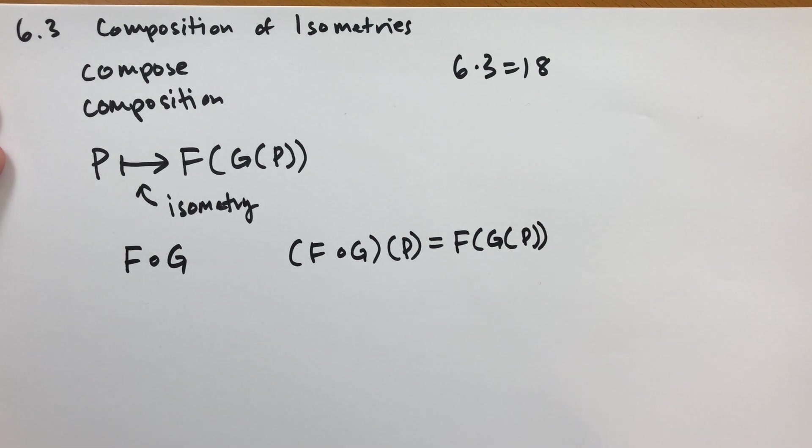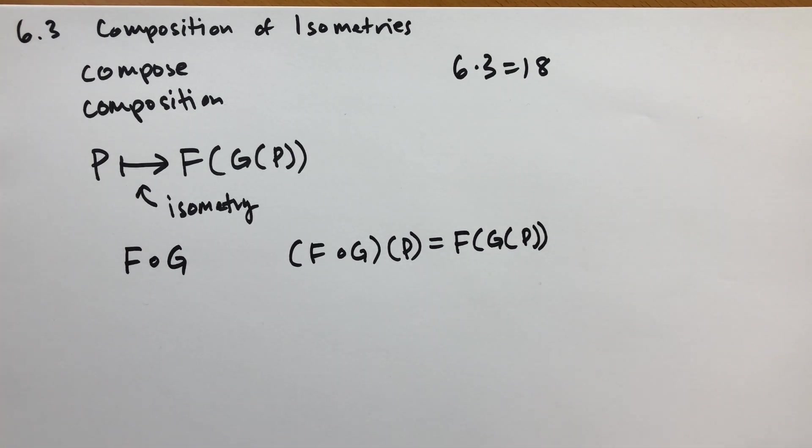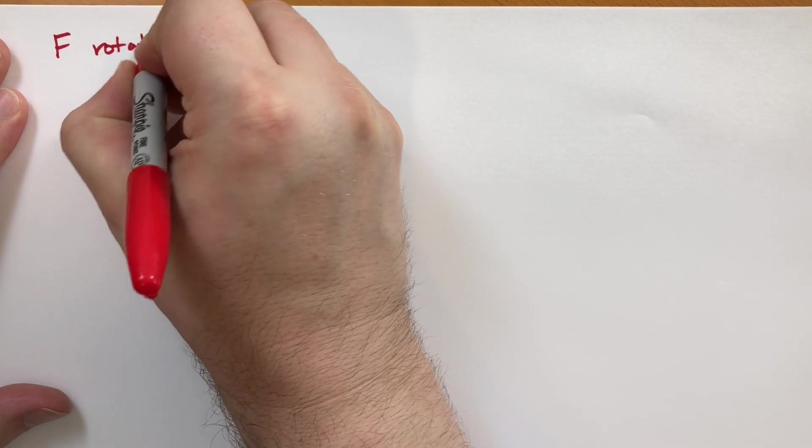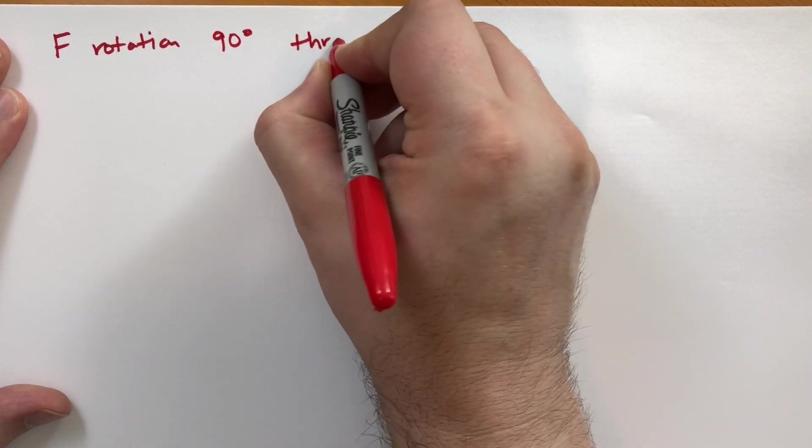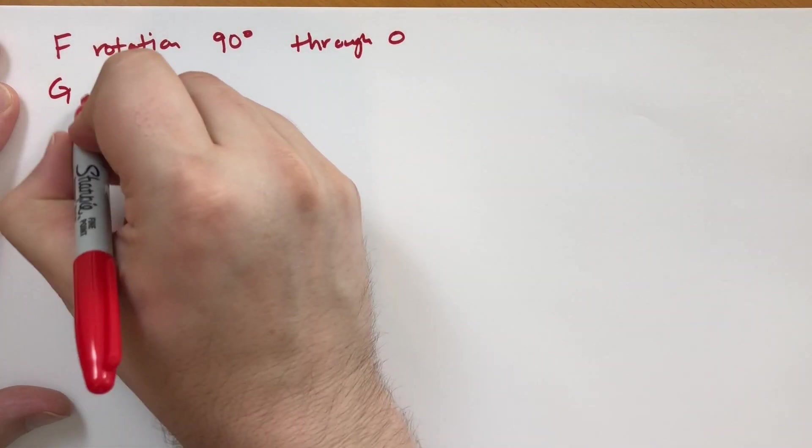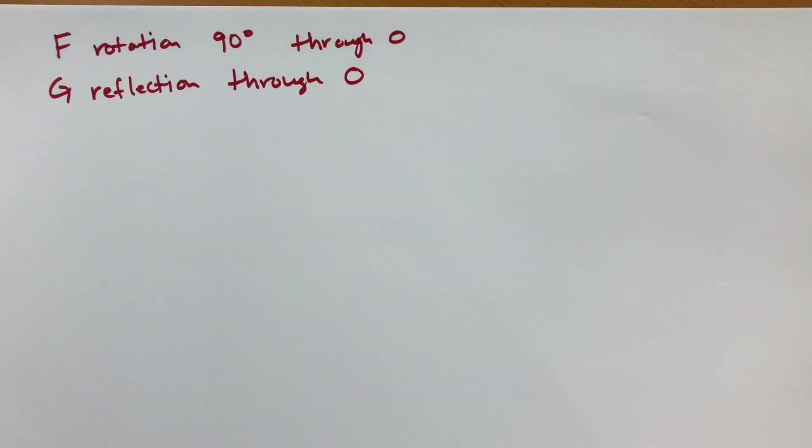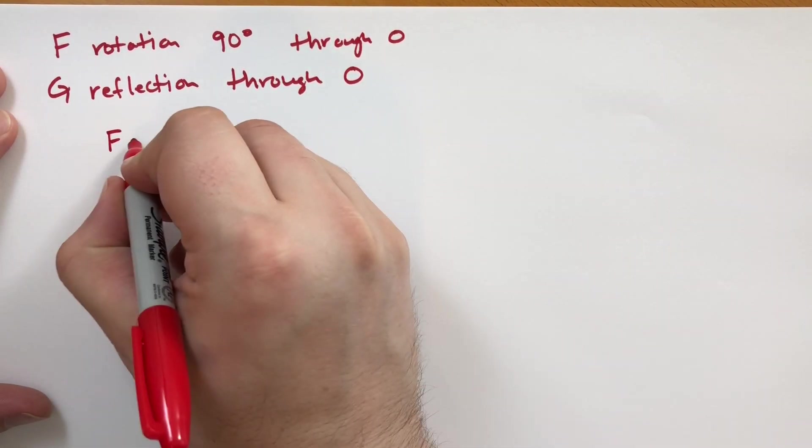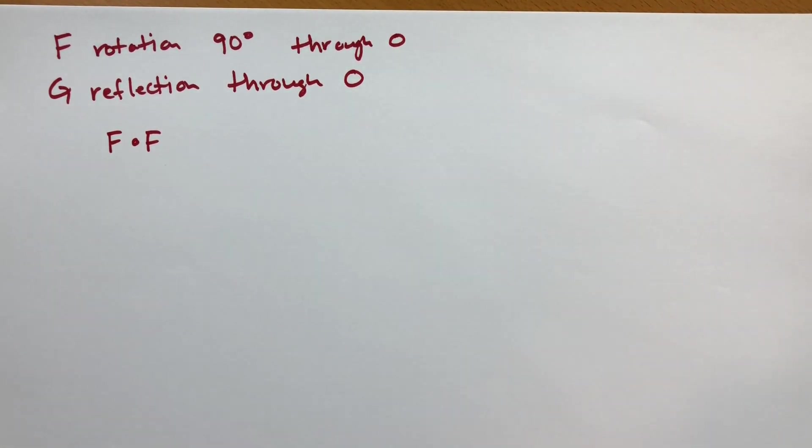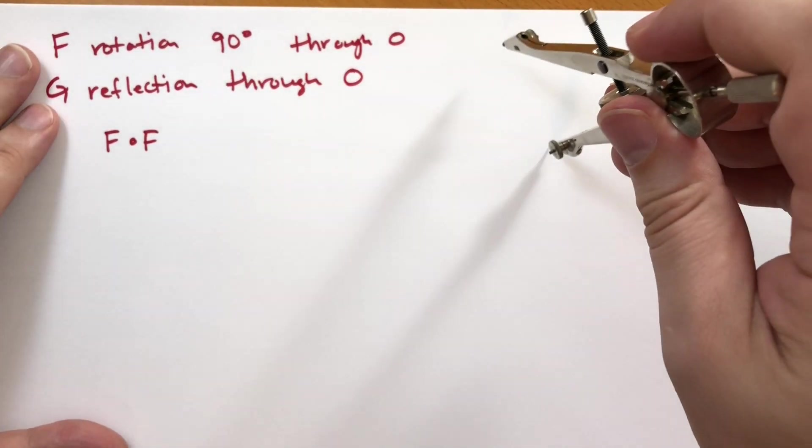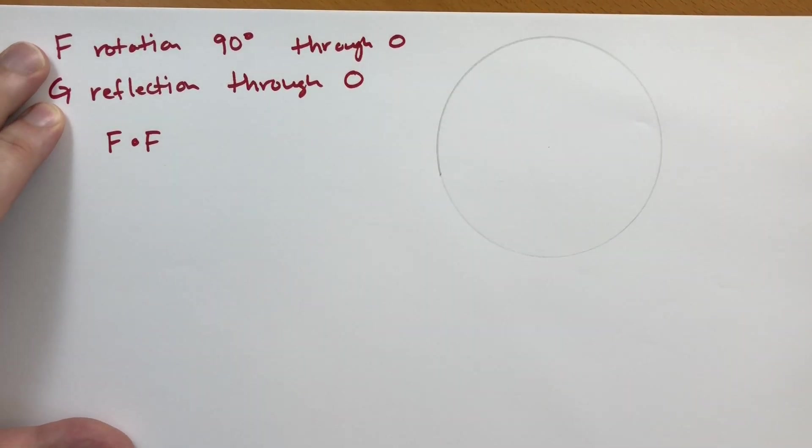As an example, let's consider the rotation F that is 90 degrees with respect to O. And let G be a reflection through O. So F is a rotation 90 degrees through O or centered on O, and G is a reflection through O.